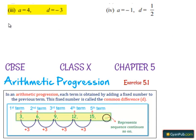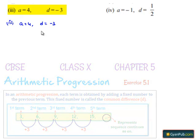Now moving on to the third bit, here the first term a is given by 4 and the common difference d is given by minus 3.